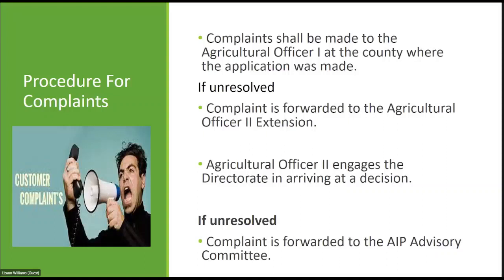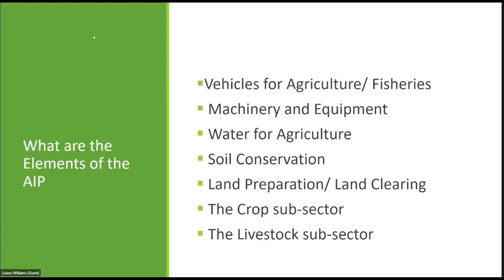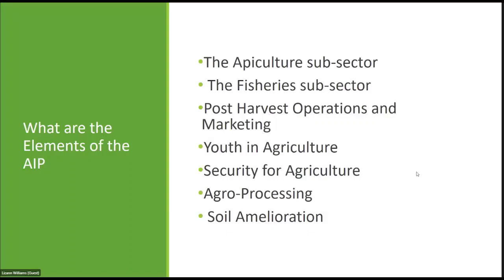The elements of the AIP are as follows: vehicles for agriculture or fisheries; machinery and equipment; water for agriculture; soil conservation; land preparation or land clearing; the crop sub-sector; the livestock sub-sector; the apiculture sub-sector; the fisheries sub-sector; post-service operations and marketing; youth in agriculture; security for agriculture; agro processing; and soil amelioration.